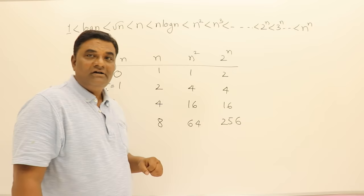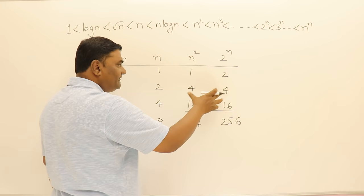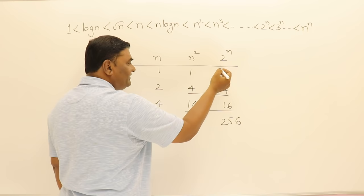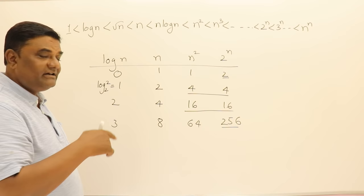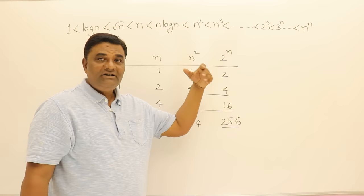But if you observe, up to here these two values were equal and here also these two values were equal, and this time it was greater. So sometime it was less or greater or equal, whatever it may be, but from this point onwards we can guarantee that 2 power n will be moving with a faster speed.